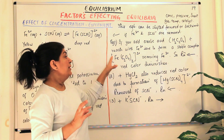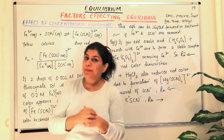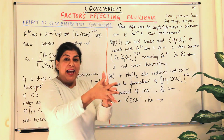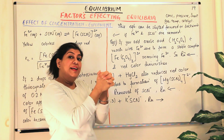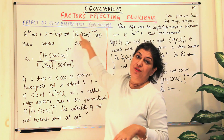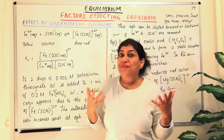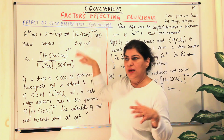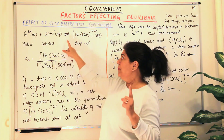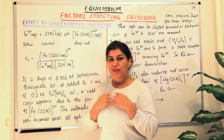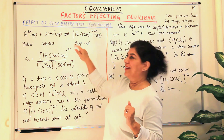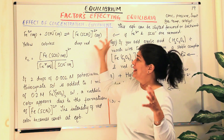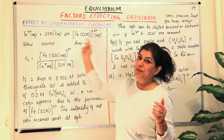As a result, the ferric ions in solution are captured by the oxalate ion and held tightly, so they are no longer available to react with the thiocyanate ions to form the complex. The equilibrium recognises this as a loss of ferric ions and, to replenish them, the product dissociates. Therefore the red colour of the solution starts becoming lighter and lighter — in other words, the reaction proceeds in the backward direction.